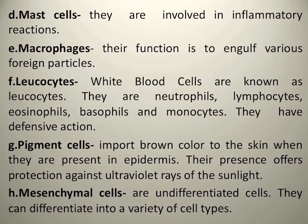Pigment cells provide color to your skin. Melanin is the pigment that provides color to your skin and also protects you from sunlight. That's why when we go into sunlight, our skin color becomes brown because of the production of melanin — it protects our skin and our inner components from UV radiation of the sun.